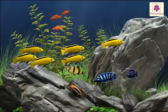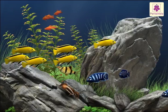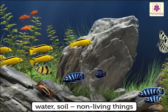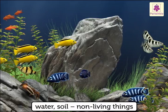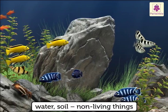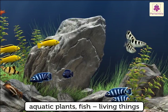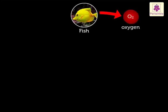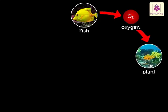Look at this aquarium. In it, the water and soil are the non-living things. The aquatic plants and fish are the living things. Fish breathe in the oxygen dissolved in the water. This oxygen comes from the plants.